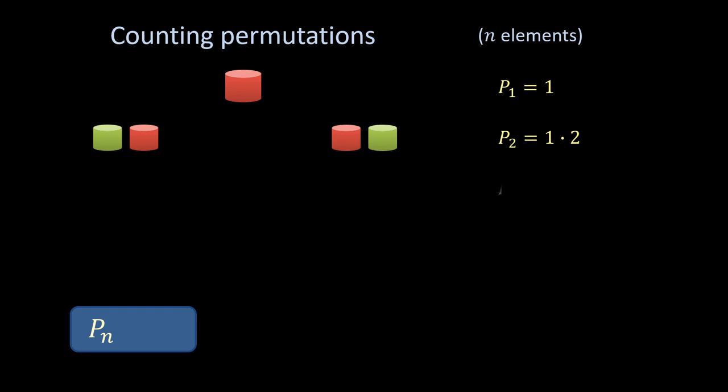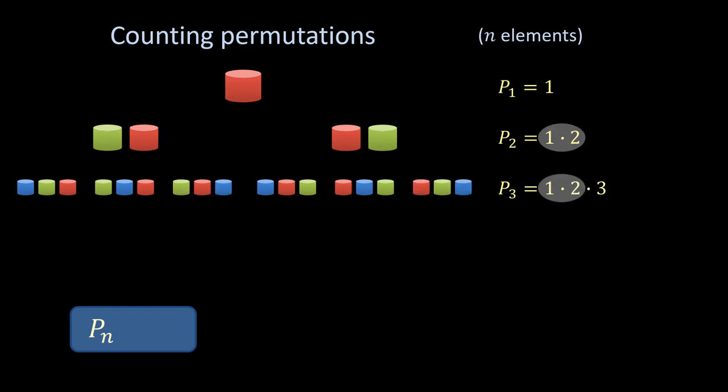Proceeding from here, there are three choices for adding a third element: to the left, in the middle, or to the right of the first two elements. So P_3 equals 6.